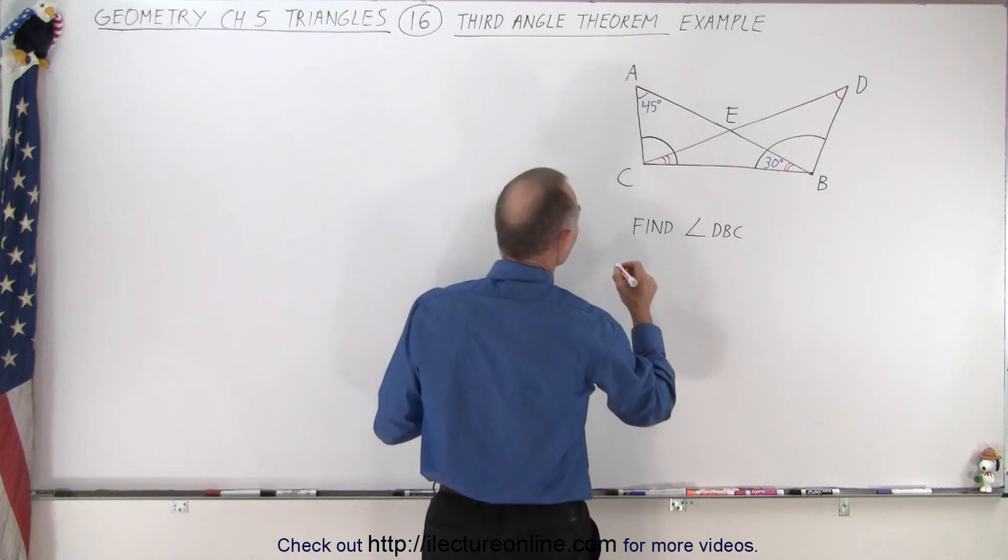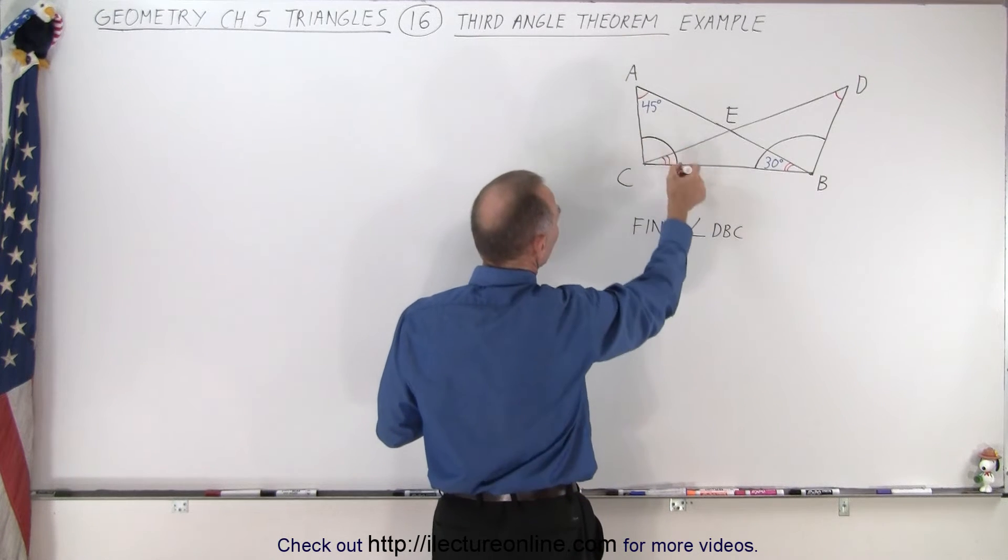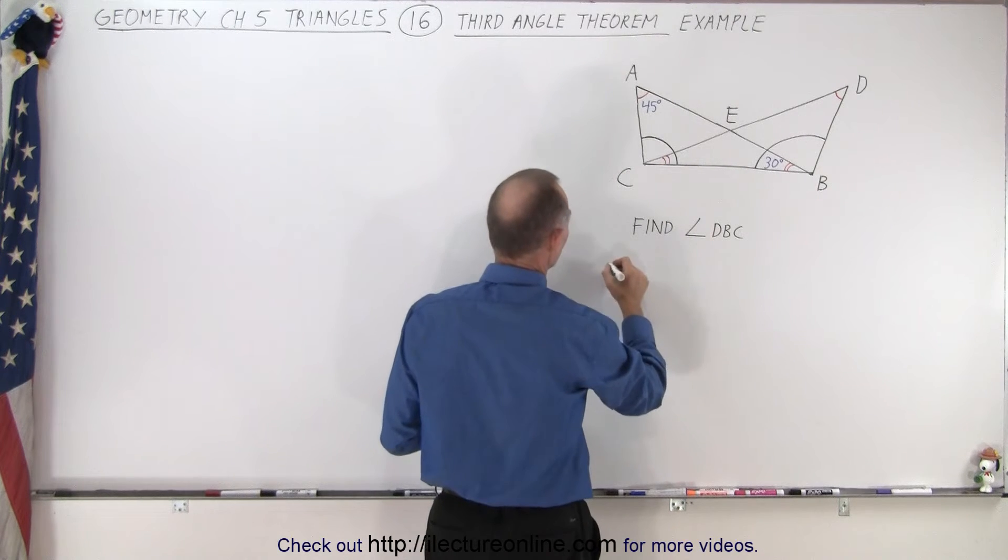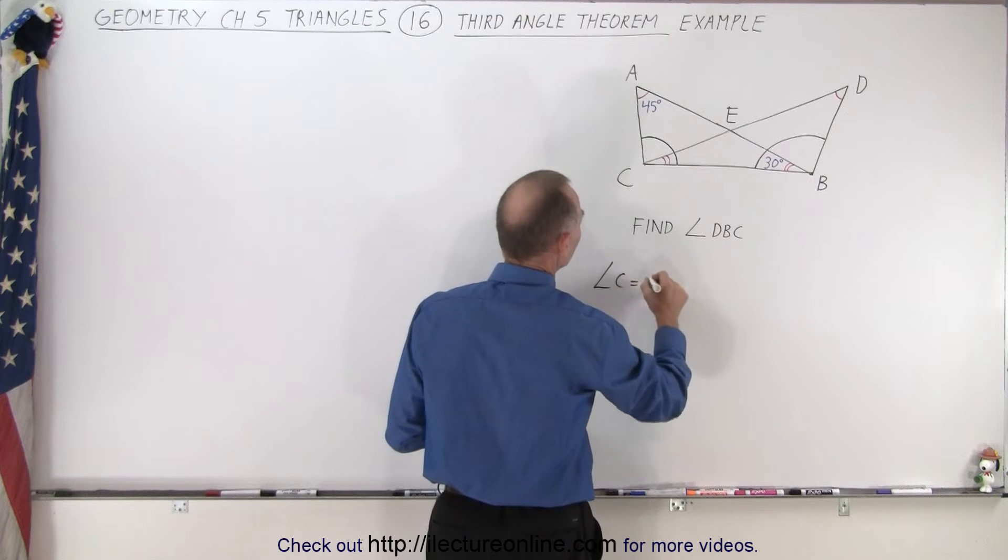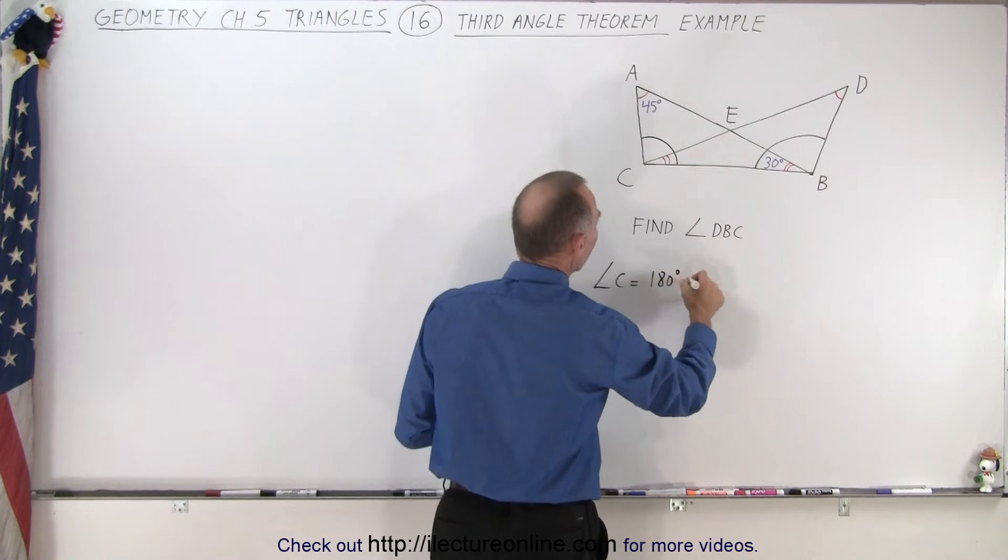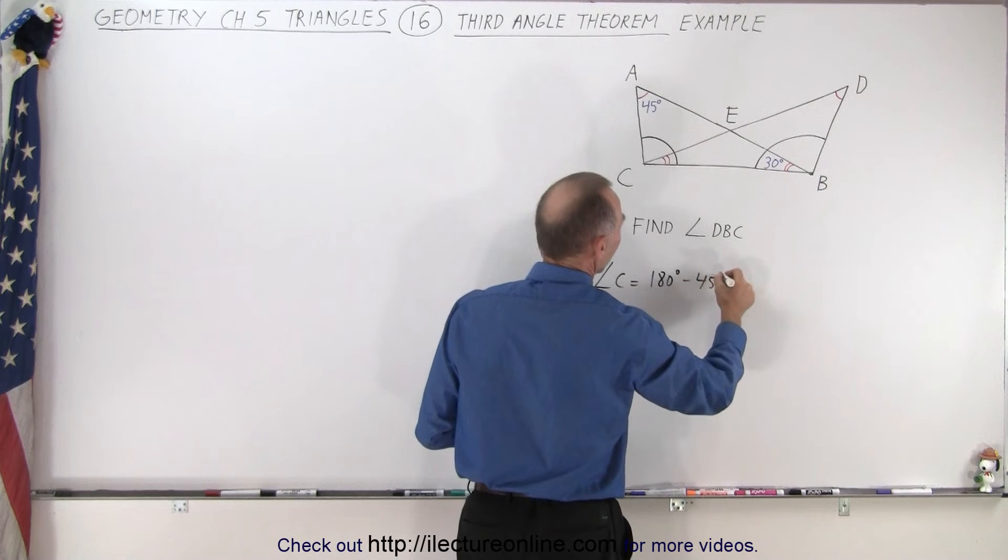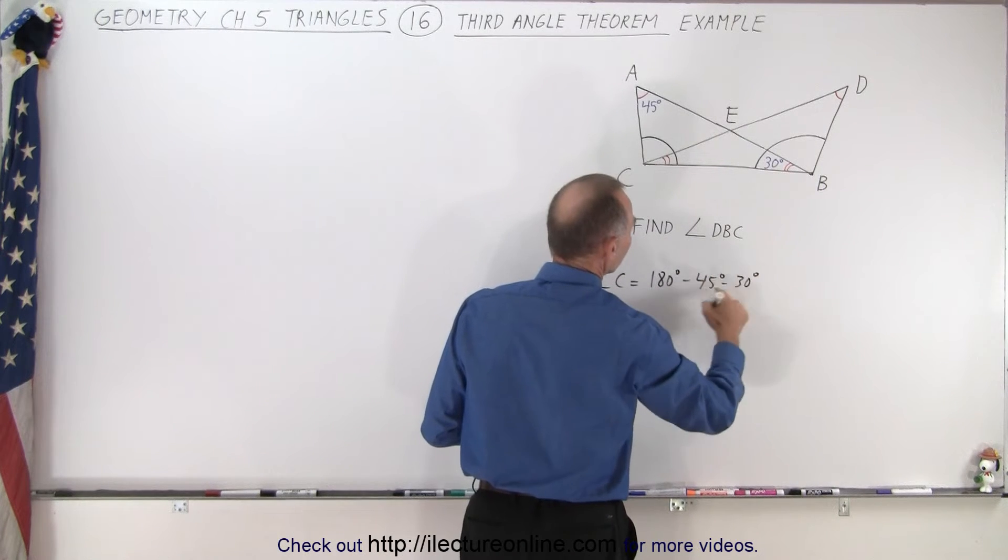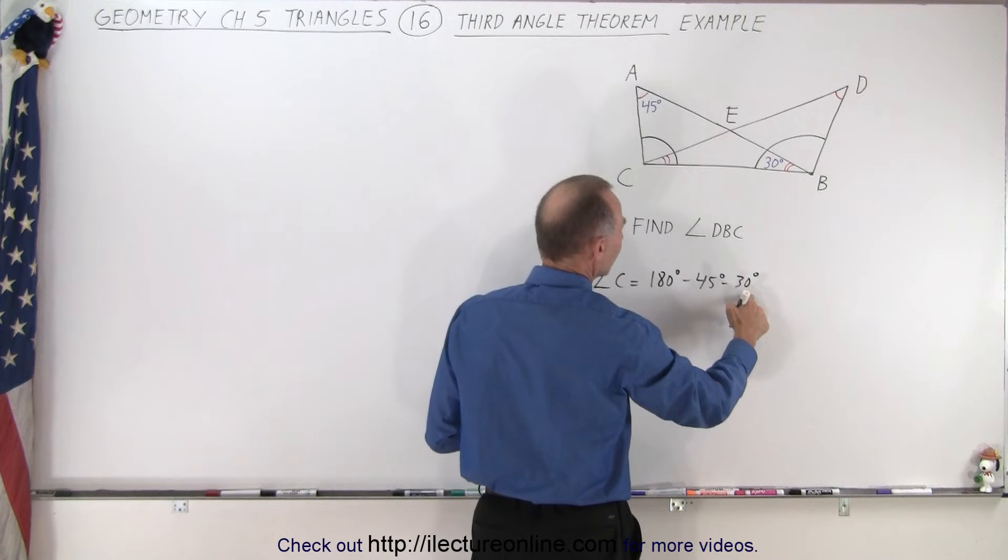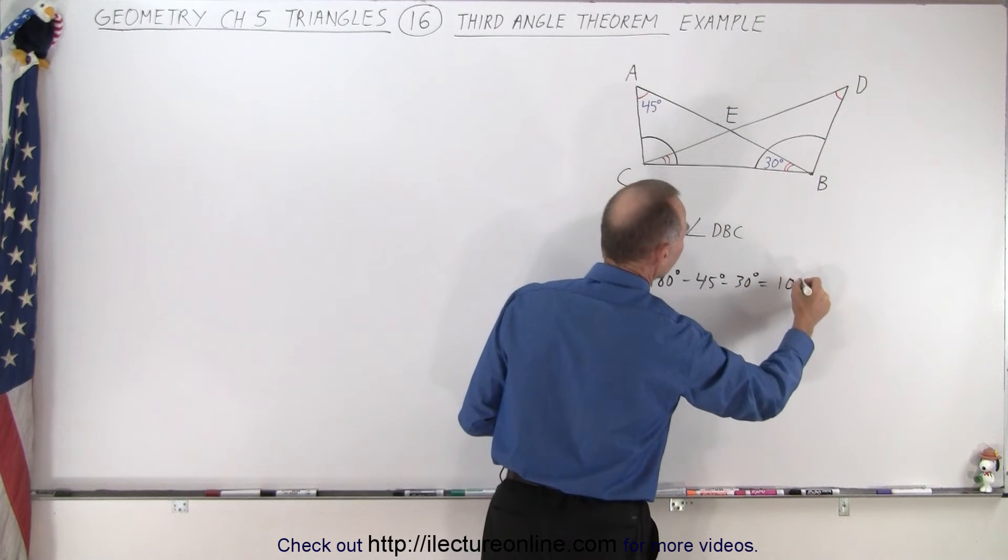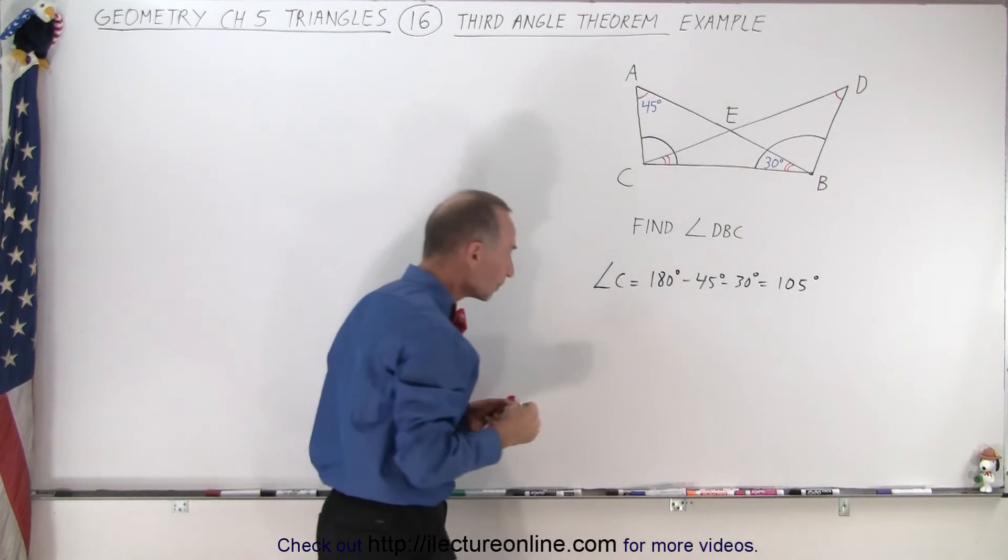Angle C is equal to 180 degrees minus the other two angles: minus 45 degrees and minus 30 degrees. That's minus 75 degrees combined, which gives us 105 degrees.